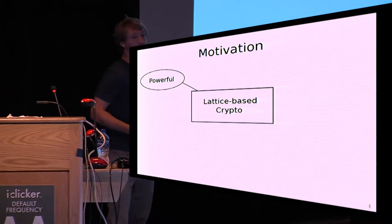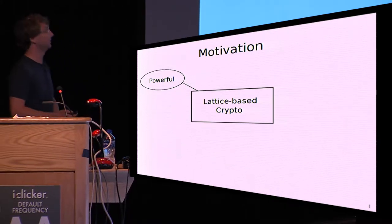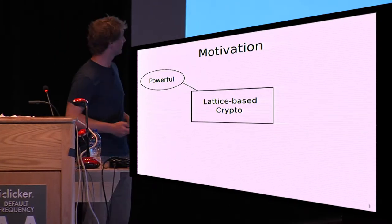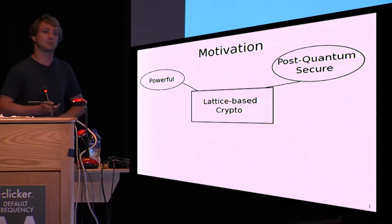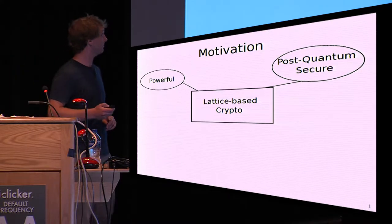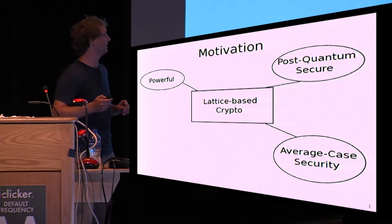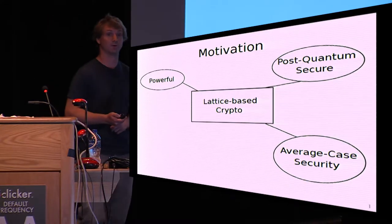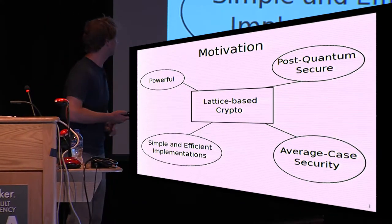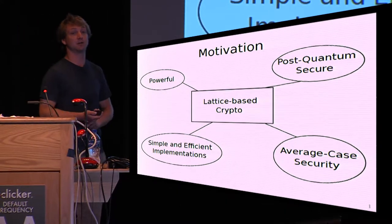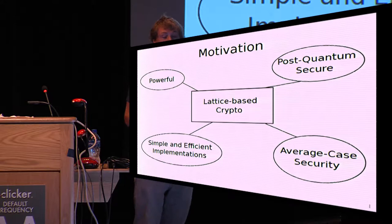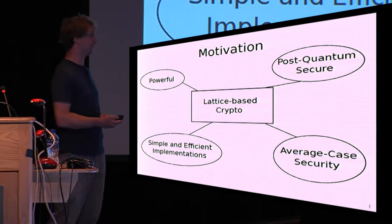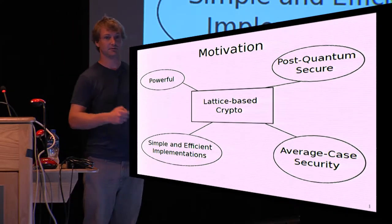On the one hand, lattices are very powerful. They allow us to construct things we don't know how to do otherwise — for example, fully homomorphic encryption, IBEs, and things like that. Furthermore, they are, at least up to this point, believed to be post-quantum secure. They also enjoy strong guarantees in terms of average-case security, stemming from worst-case to average-case reductions. And they allow for simple and efficient implementations — in the end, it's usually just matrix-vector multiplications over relatively small integers, or ring element multiplications in the ring setting.